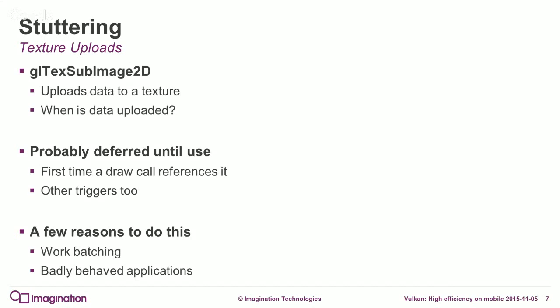The first issue I'll touch on is texture uploading. In OpenGL ES, GLTexSubImage2D uploads data to a texture — seems straightforward enough. But when does the data actually get uploaded to your texture? It's probably not when you think it is.